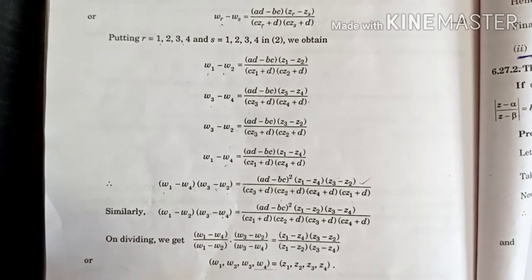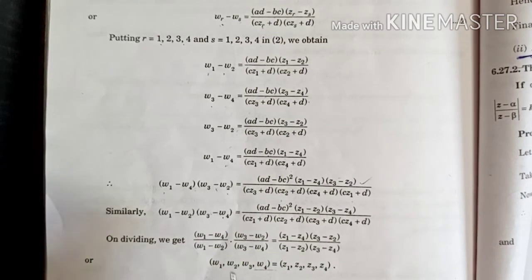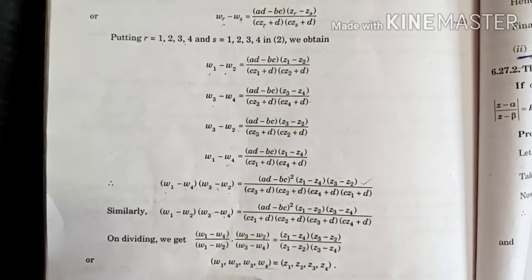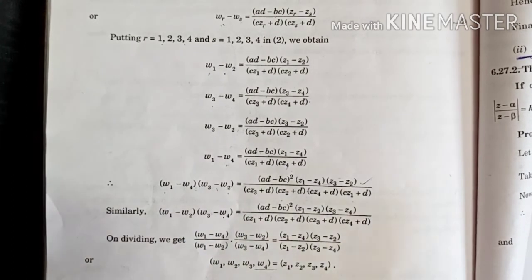This is what you had to prove, that cross ratio is invariant under Möbius transformation. Meaning W just converts to Z, your transformation, the rest remains the same.